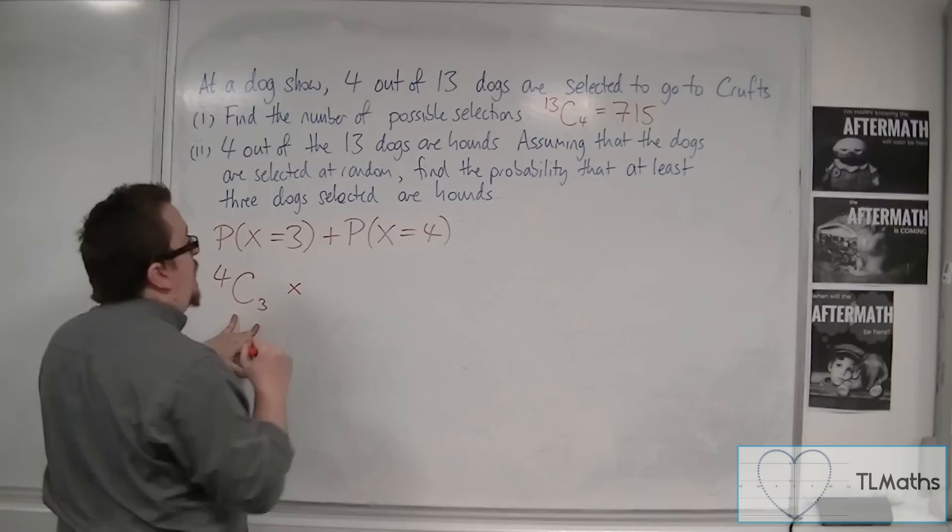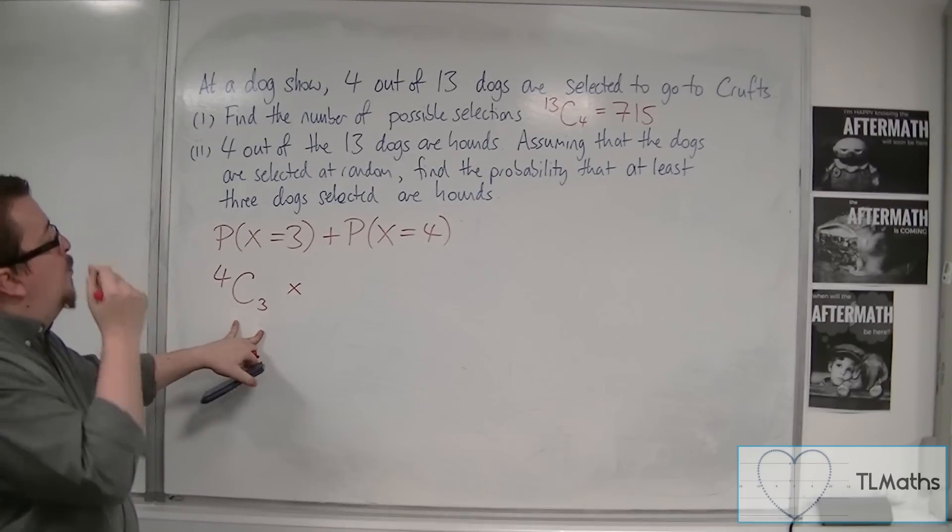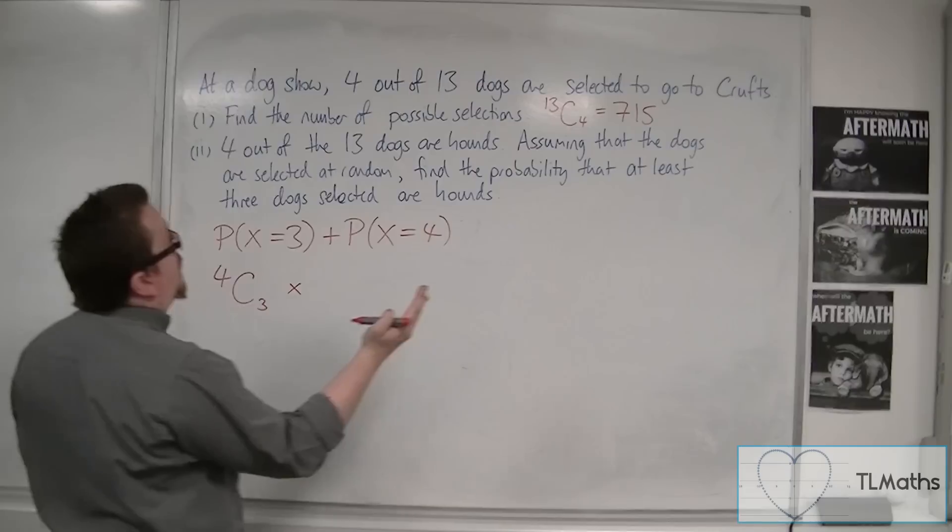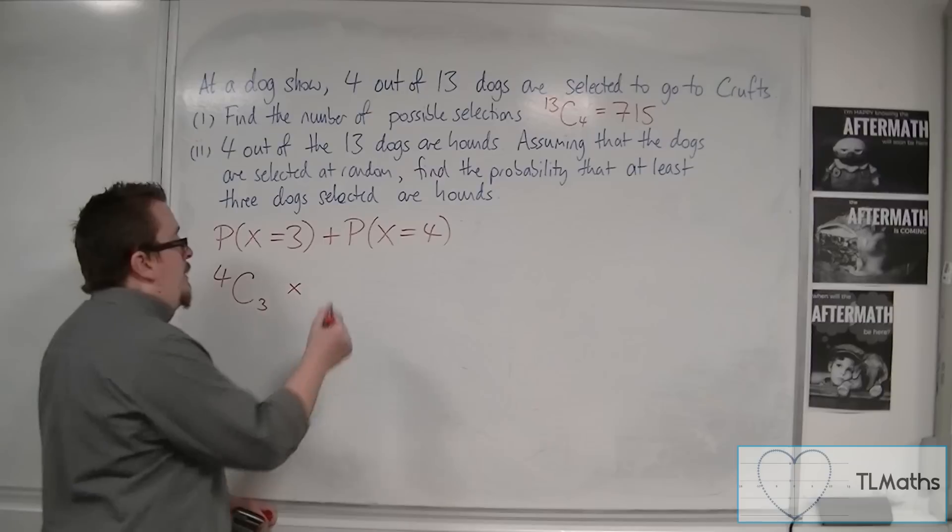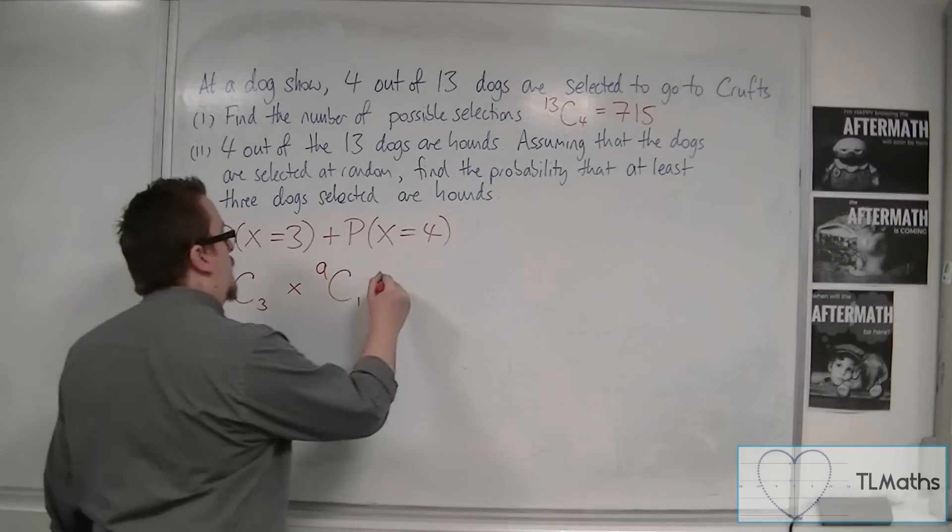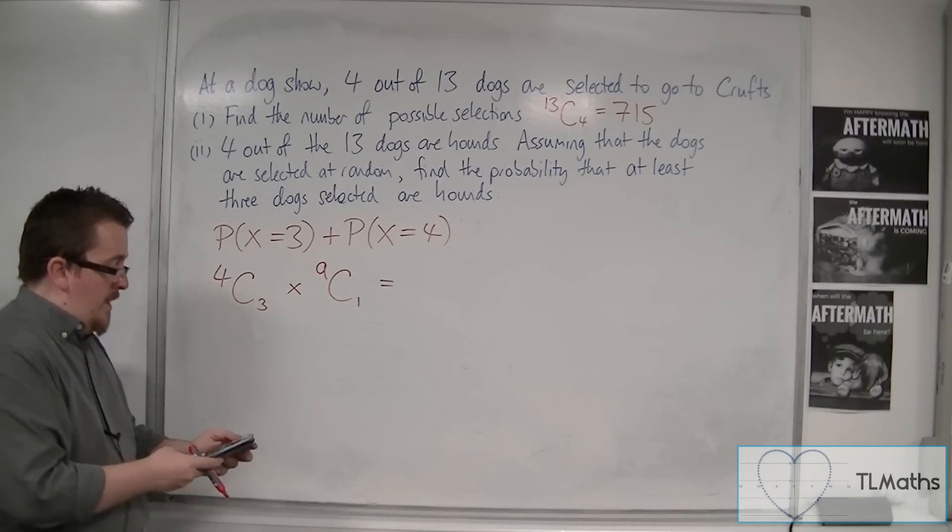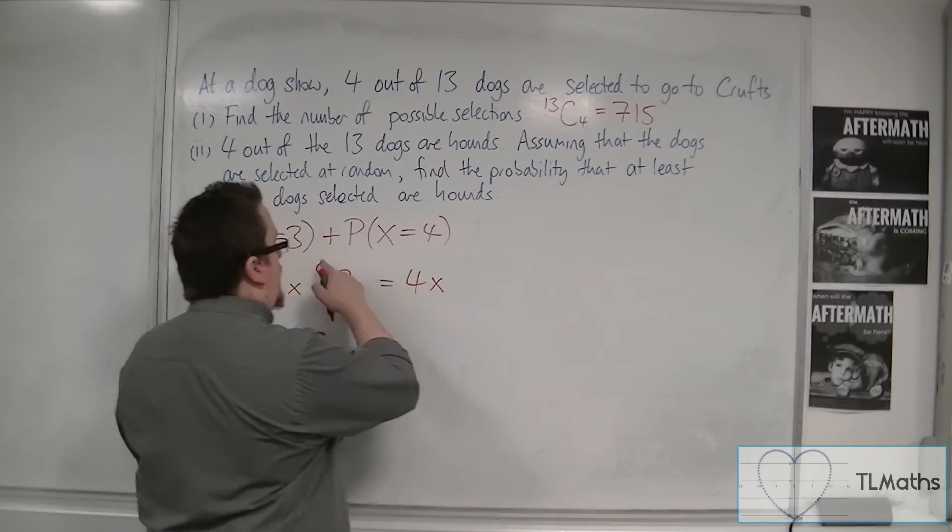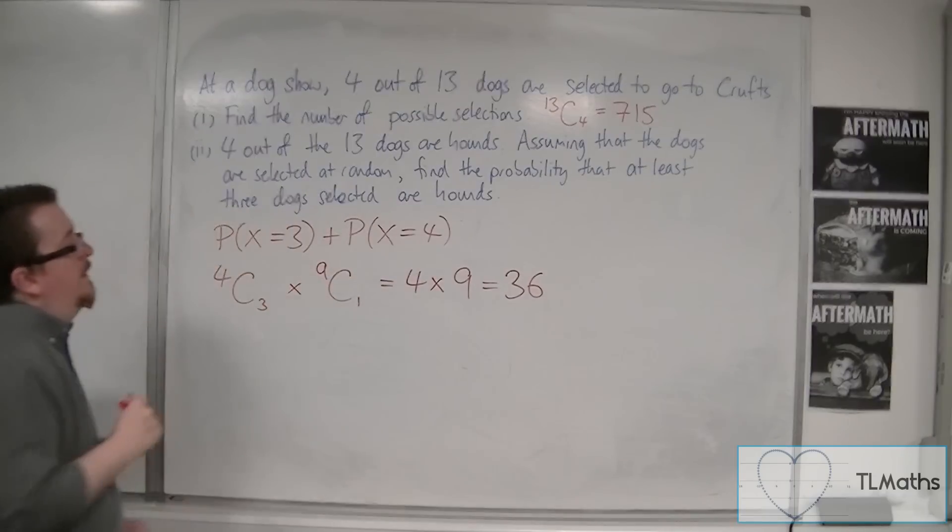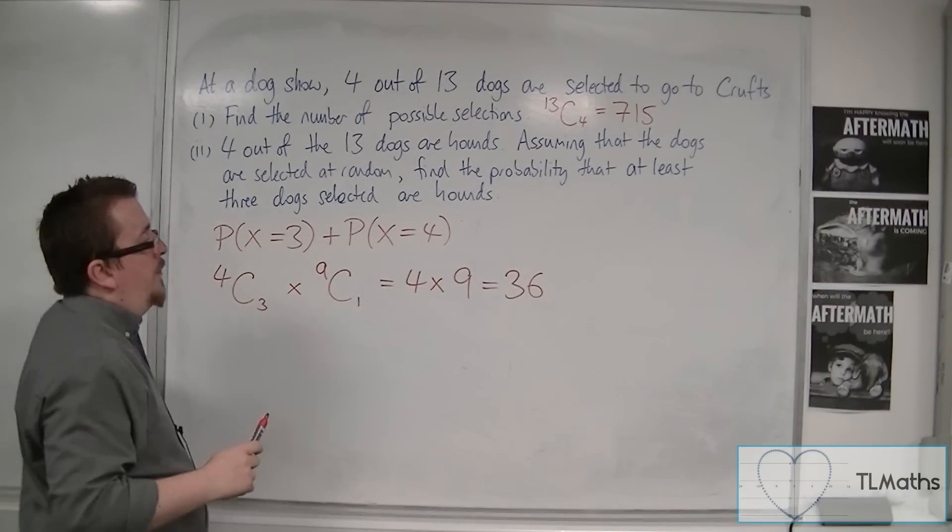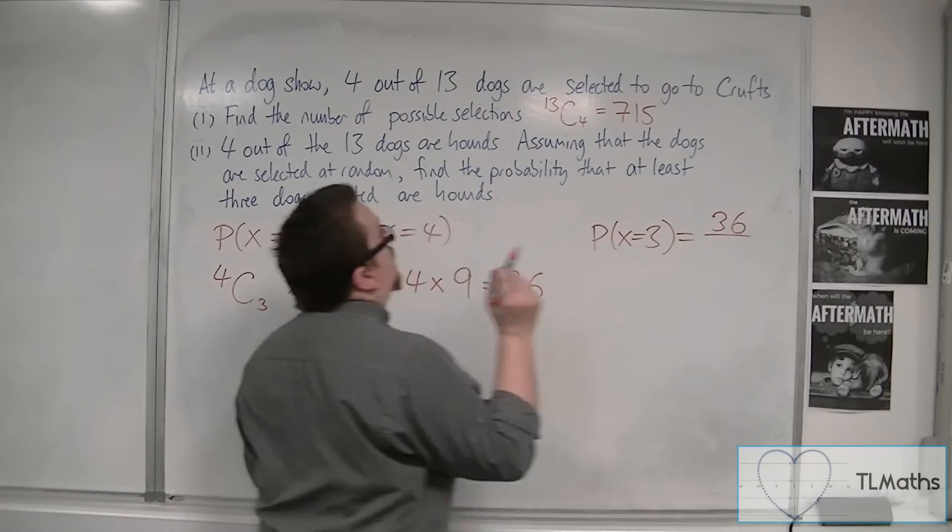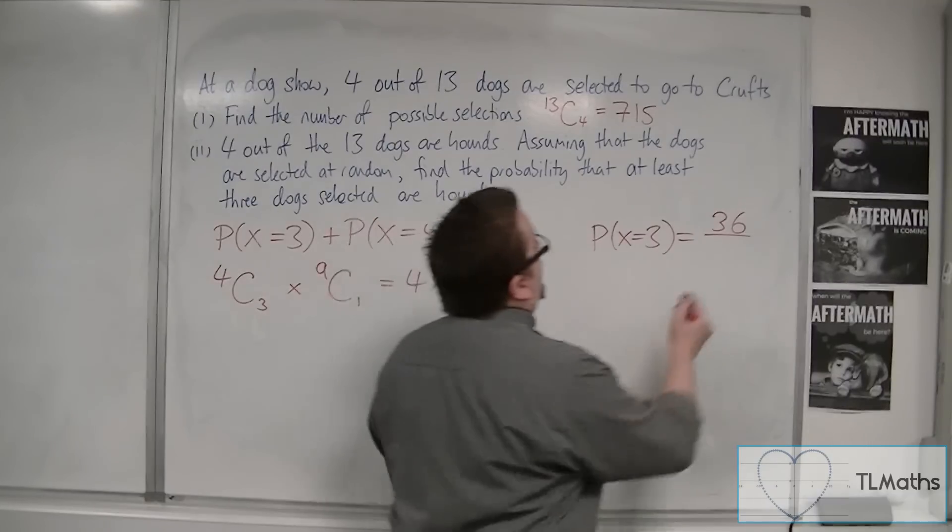And we also need to pick 1 dog that isn't a hound. Now, there are 13 dogs in total, so there are 9 dogs that are not hounds. So, I need to pick 1 of those 9 dogs. So, we have 4 NCR 3, which is 4, and 9 NCR 1, which is 9. So, 4 times 9 is 36. So, the probability of X being equal to 3 is 36 out of the total number of possible combinations, 715.